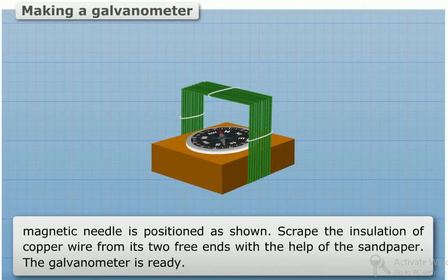Scrape the insulation of copper wire from its two free ends with the help of sandpaper. The galvanometer is ready.